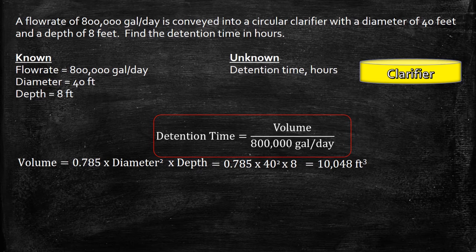The volume we just calculated is in cubic feet. We want the units to cancel out so we want to convert this cubic feet into gallons so that the gallons will cancel out and the detention time will be in days which we can convert later to hours.